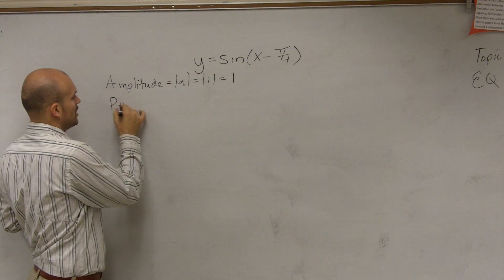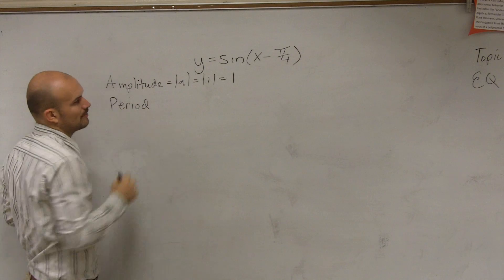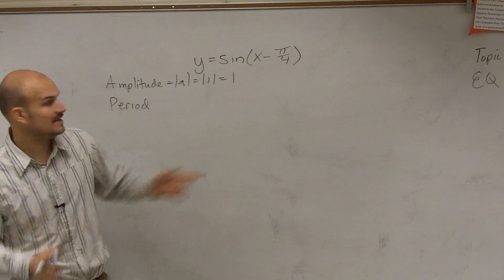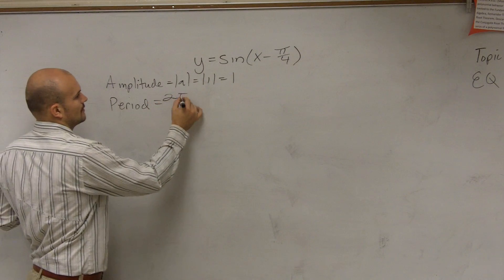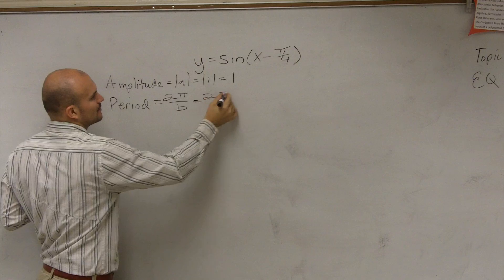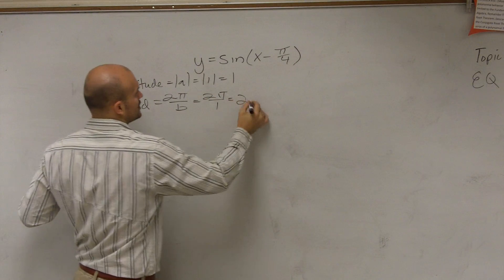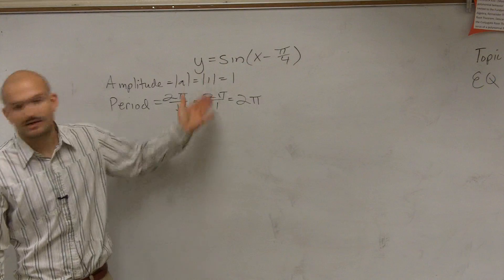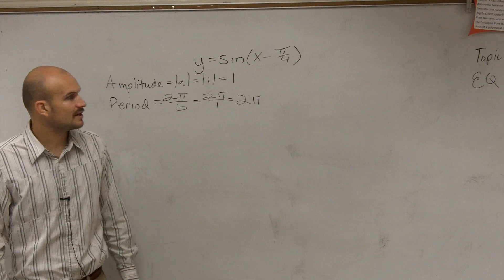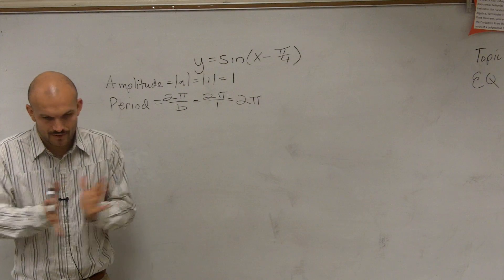The next thing is we determine our period. Remember, period is going to be 2π divided by b, where b is your coefficient of x. And in this example, we have 2π over 1, which equals 2π. So right now, we're looking very similar to our parent graph.